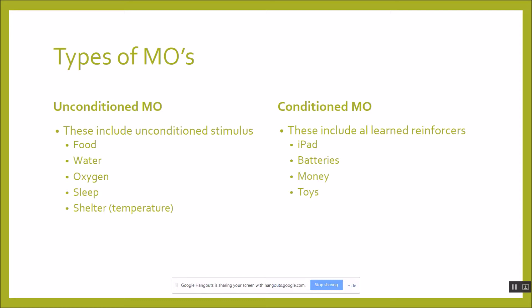There are two types of MOs: unconditioned and conditioned. Unconditioned MOs are anything unconditioned — food, water, oxygen, sleep, and shelter, which would include temperature or staying dry. Conditioned motivating operations are all learned reinforcers — iPad, batteries, money, toys, anything like that.